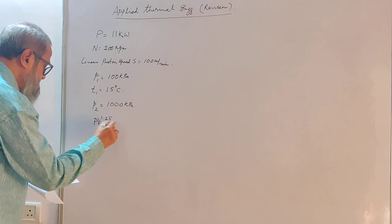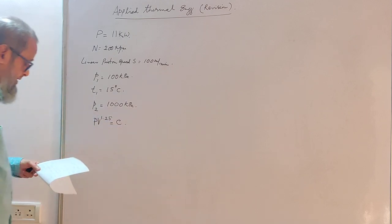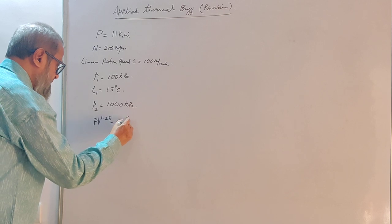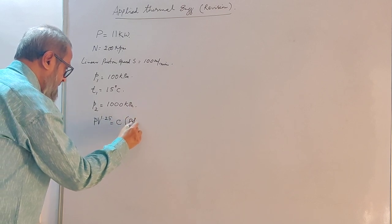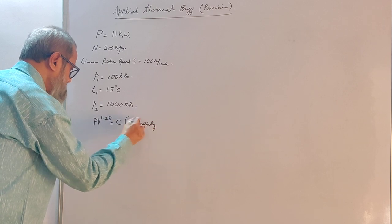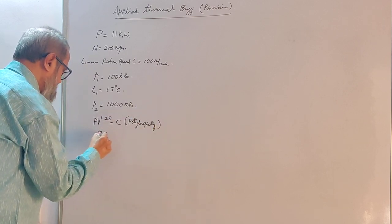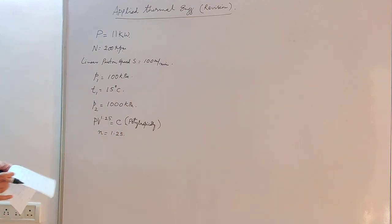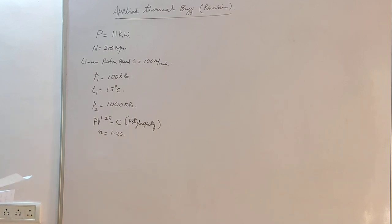Assume the law of compression to be PV to the power of 1.25 equals constant — that is, the air is polytropically compressed, and the value of small n is 1.25. Neglect clearance effect. This is the first problem the student has sent to me.